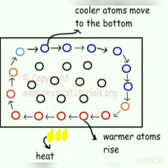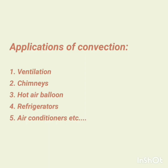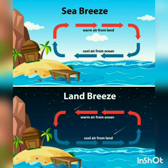Heat is carried by the molecules of the fluid from one place to another. The circular motion that is set up in a fluid, when warm fluid rises up and cooler fluid sinks, is called a convection current. We also discussed a few practical applications of convection in our last video. In today's video, we will discuss yet another very important application of convection — sea breeze and land breeze — which are a result of convection currents set up due to the uneven heating of land and water.